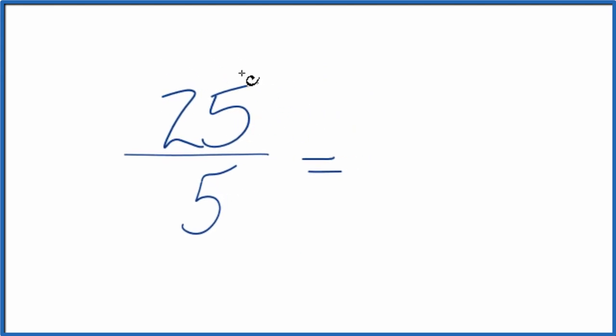So we divide 25 by 5. That gives us 5. Divide 5 by 5, we get 1.